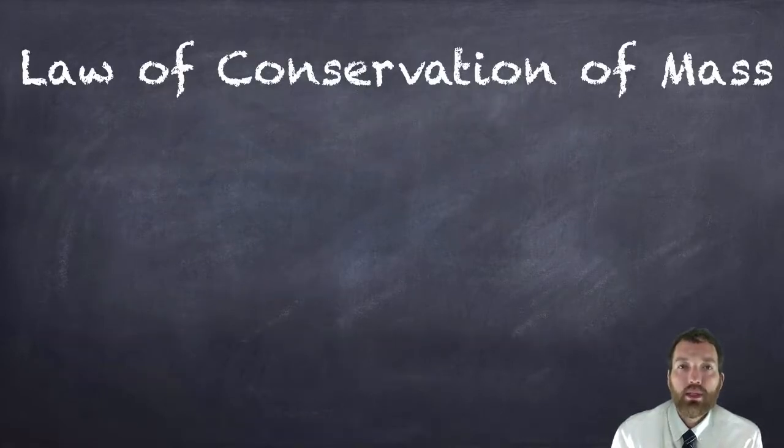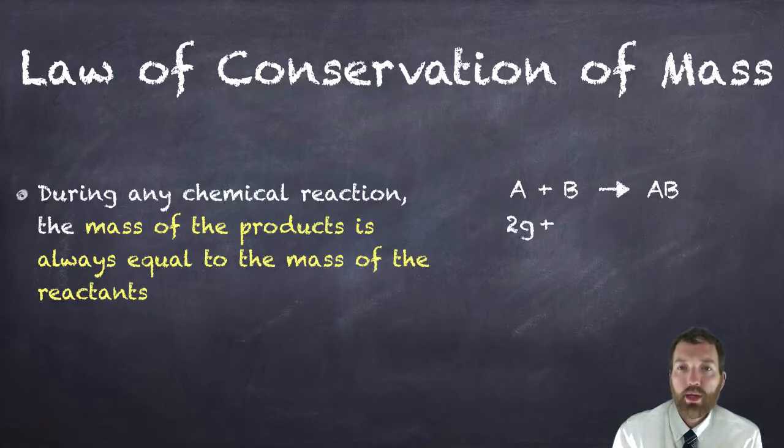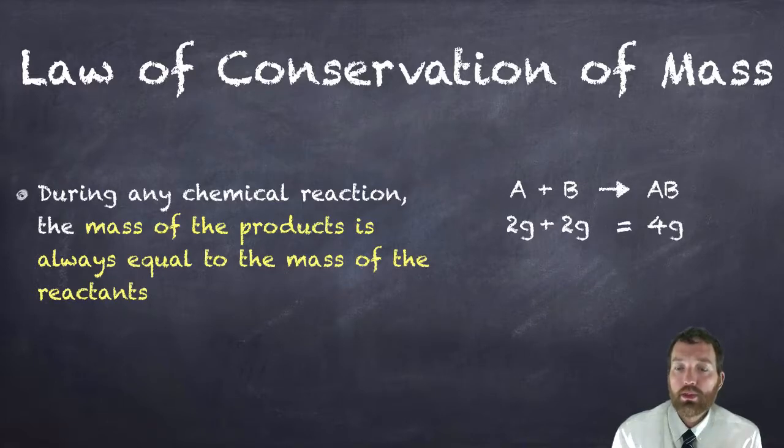The last thing I want to talk about is the law of conservation of mass. In any chemical reaction, the mass of the products is always equal to the mass of the reactants. So let's go back to our hypothetical equation here: A plus B makes AB. If A weighed two grams and B weighed two grams, what would be the mass of our product AB? Well, the law says that the mass of the products is always equal, so of course it's four.